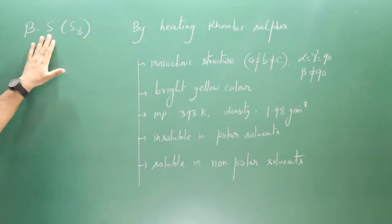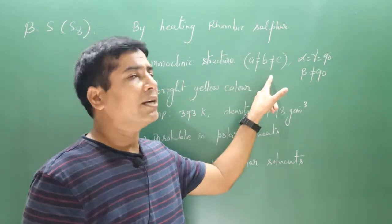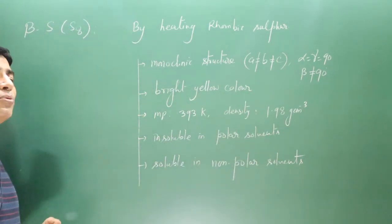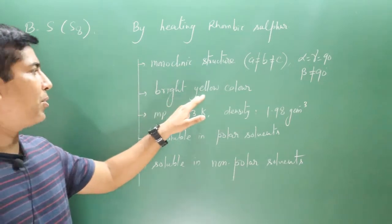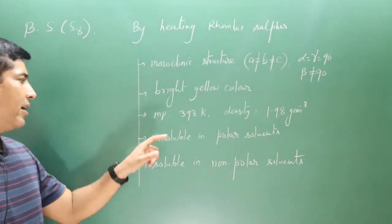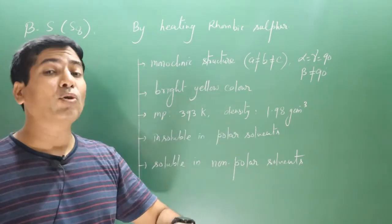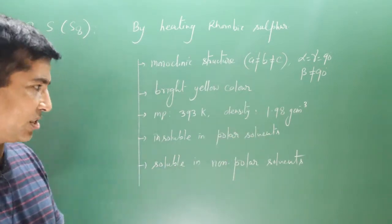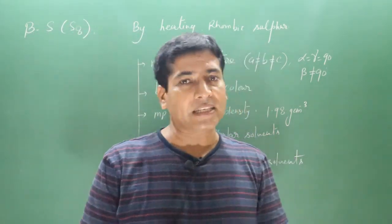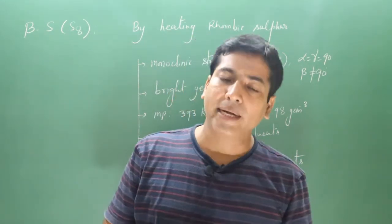Beta sulfur has a monoclinic structure where a ≠ b ≠ c, with alpha and gamma equal to 90 degrees but beta not equal to 90 degrees. Beta sulfur is a bright yellow color solid substance. Its melting point is 390 Kelvin, which is slightly higher than that of alpha sulfur, and its density is 1.98 g/cm³, slightly lower than alpha sulfur. It is also nonpolar by nature, so it does not dissolve in polar solvents like water, but can dissolve in nonpolar solvents such as benzene, ether, and carbon disulfide.